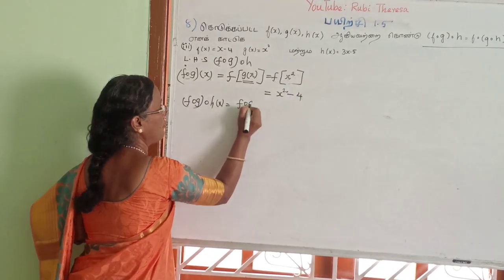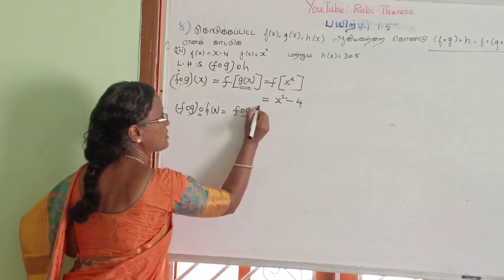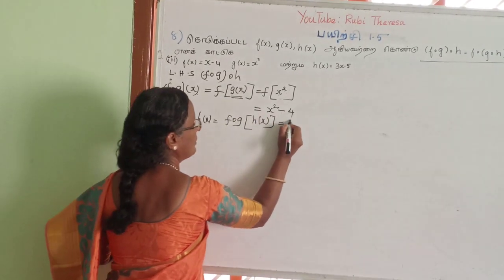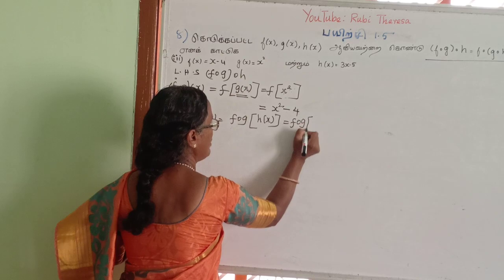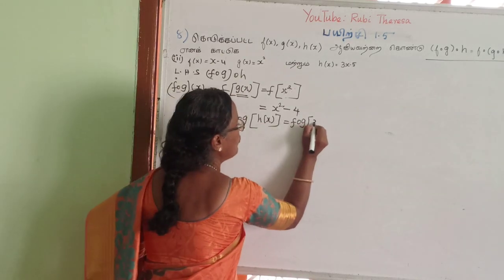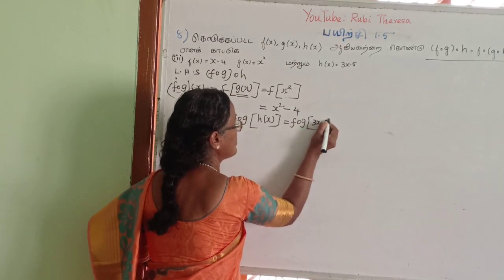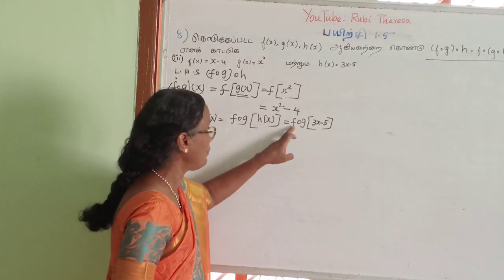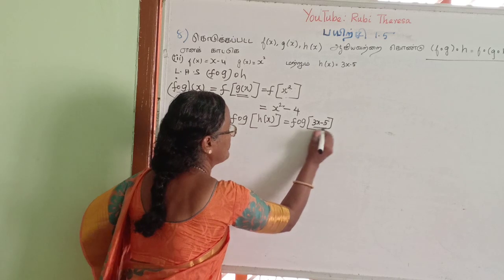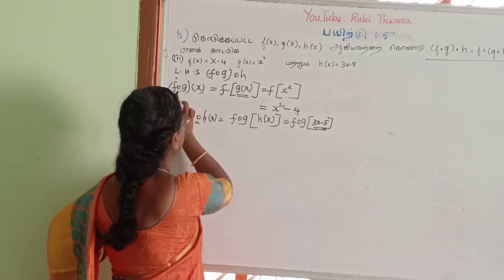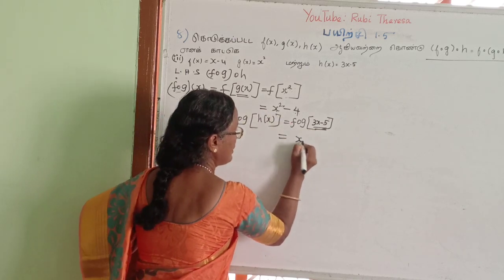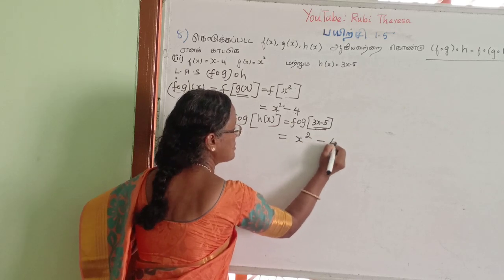This is F of G. Now we replace it. This is F of X. This is F of G of H of X. This is F of G of X.